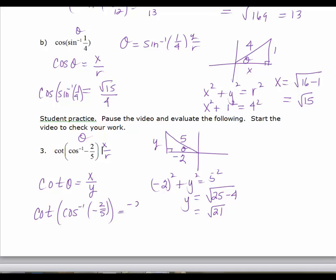That's equal to my x coordinate, which is negative 2, over my y coordinate, which is the square root of 21. Or if you rationalize, negative 2 square root of 21 over 21.